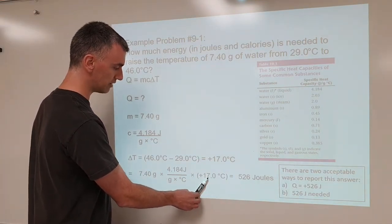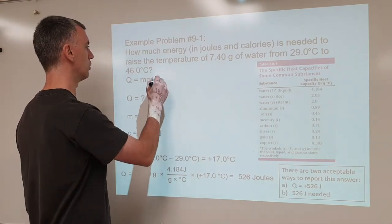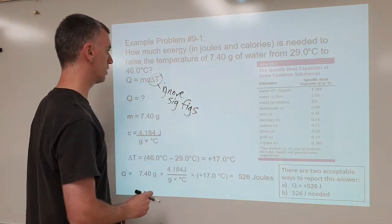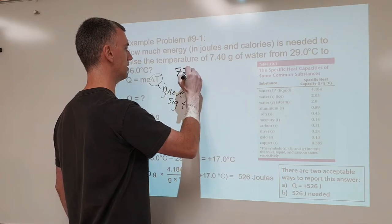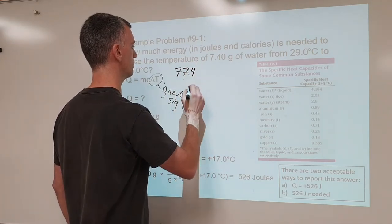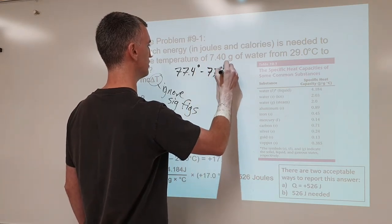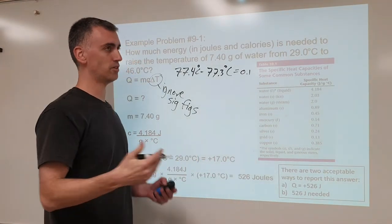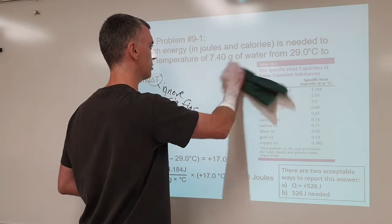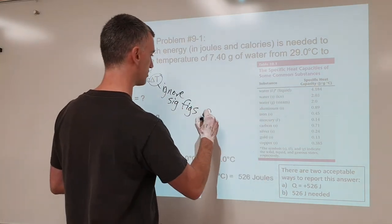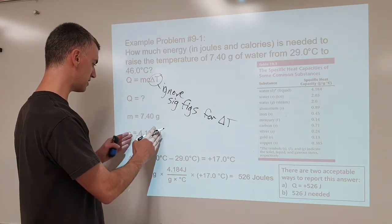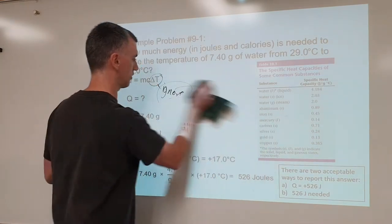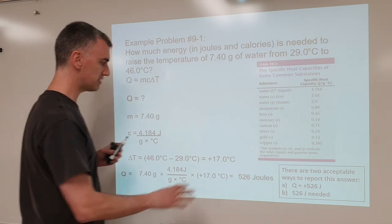One final note about rounding: when it comes to delta T, you're going to ignore sig figs. The reason why is because you could have, for example, 77.4 degrees Celsius minus 77.3 degrees Celsius — those are three sig fig numbers. You subtract them and get 0.1 degrees Celsius, which is now just one sig fig, giving the false impression of not having much accuracy. So the simple answer is: ignore sig figs for delta T only. Don't ignore them for mass or specific heat capacity. Delta T does not affect how you round your answer.